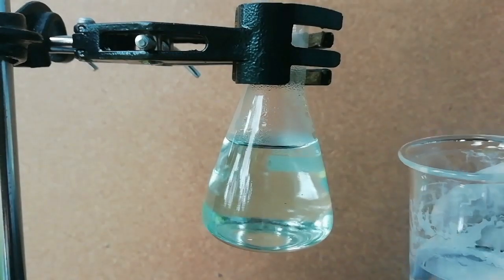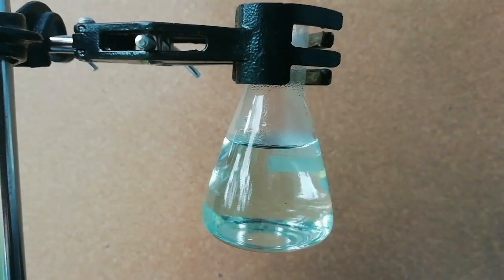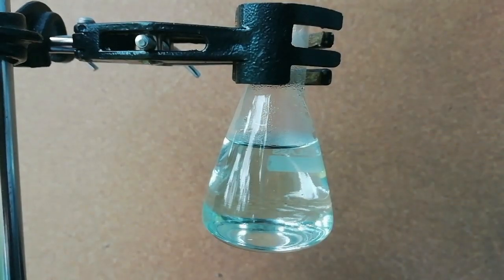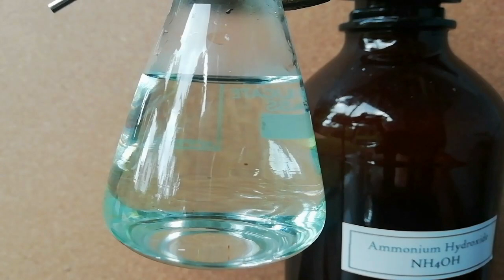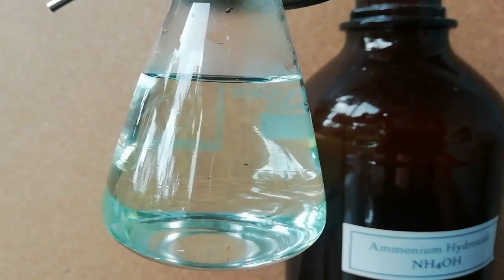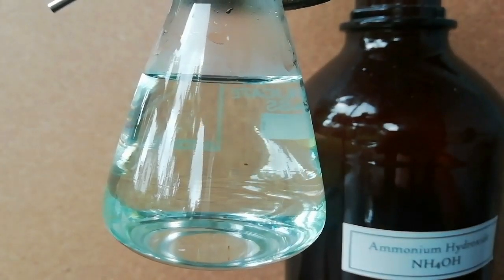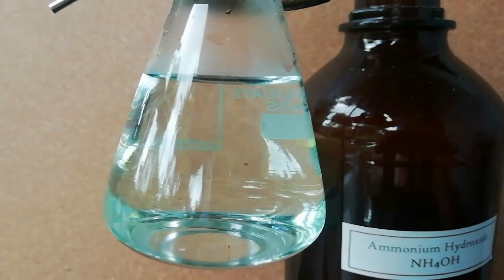Now the solution is ready to start the reaction. Add ammonium hydroxide to the mixture, then nickel DMG red precipitate starts to form.